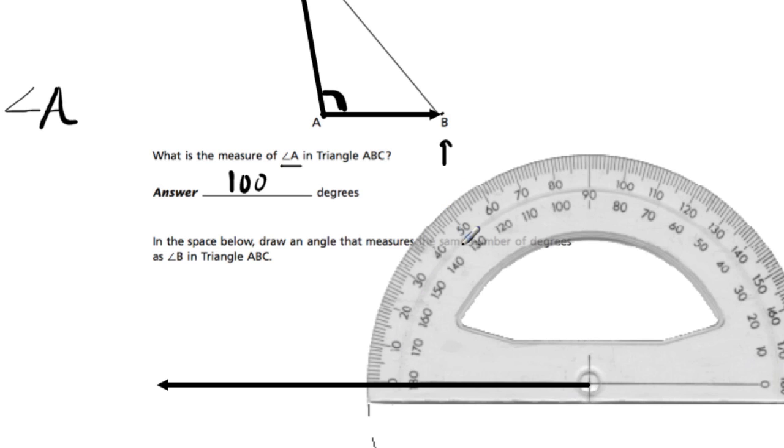Again, I'm using the outer track because the angle is going to open up this way. The numbers are counting up. As I open the angle further and further, the numbers should be higher and higher. So I mark it at 50.